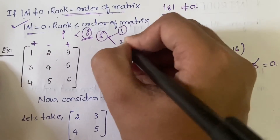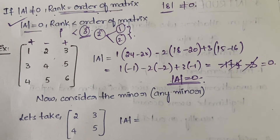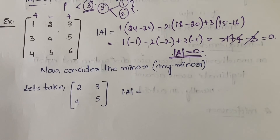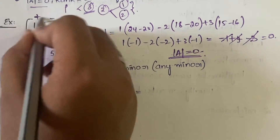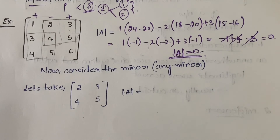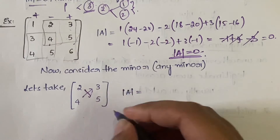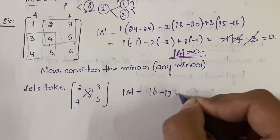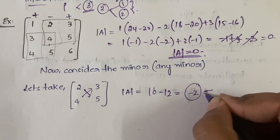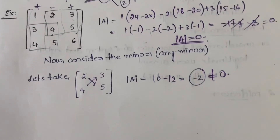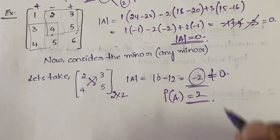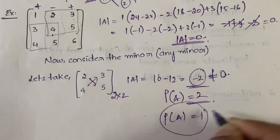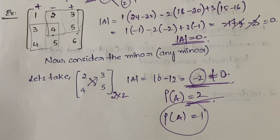Since the determinant is 0, the rank is less than the order, so rank < 3. Less than 3 means it can be 1 or 2. To determine which, you take any 2×2 minor from the matrix. For this example we take the minor: 2, 4 / 3, 5. The 2×2 determinant is 2×5 − 4×3 = 10 − 12 = −2. Since this is not equal to 0, the rank equals the order of this 2×2 matrix, which is 2. So ρ(A) = 2. If you had gotten 0 here as well, the rank would directly be 1.